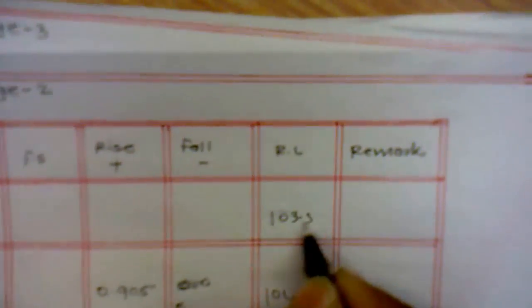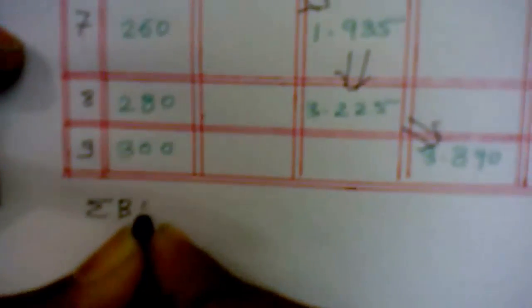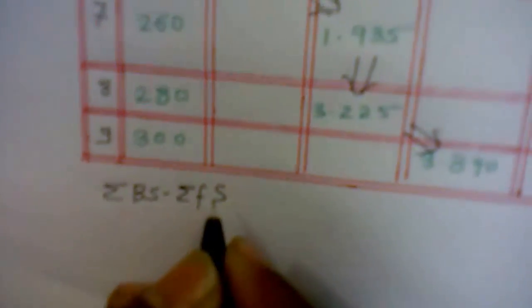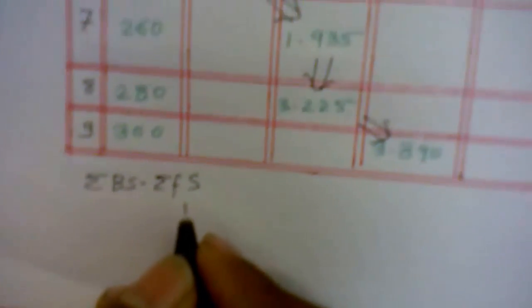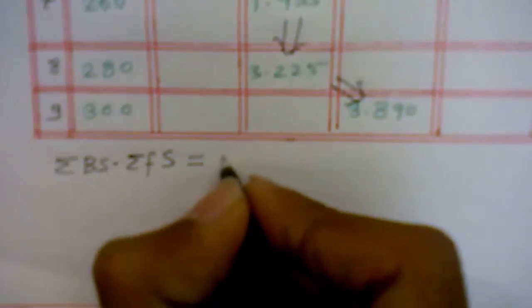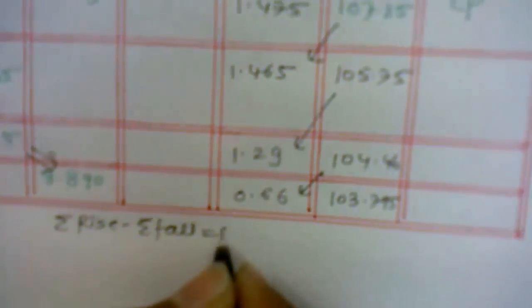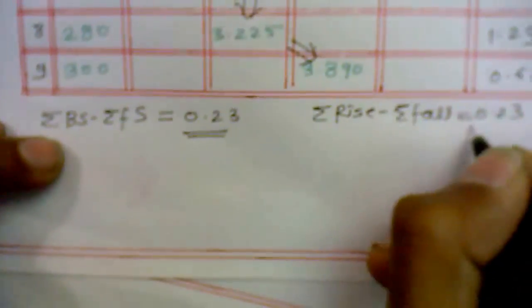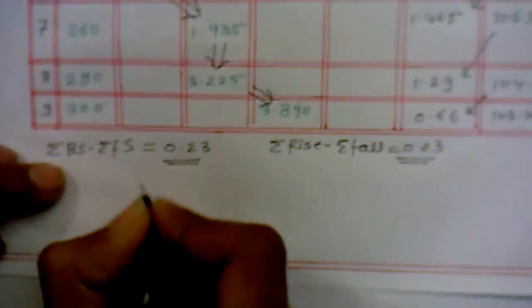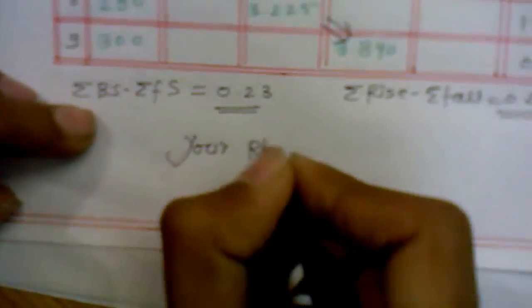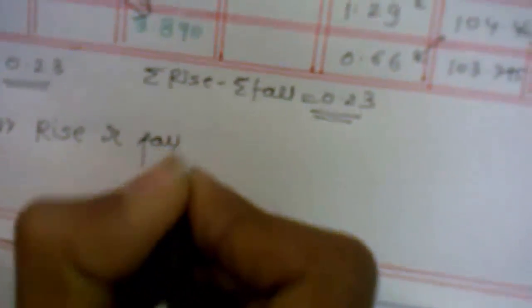Now it is very important to conclude that summation of BS minus summation of FS. Summation of BS minus FS, so here summation of BS is 0.23 and summation of rise minus summation of fall is equal to 0.23. So that means both values are getting equal, so your rise and fall method is right.